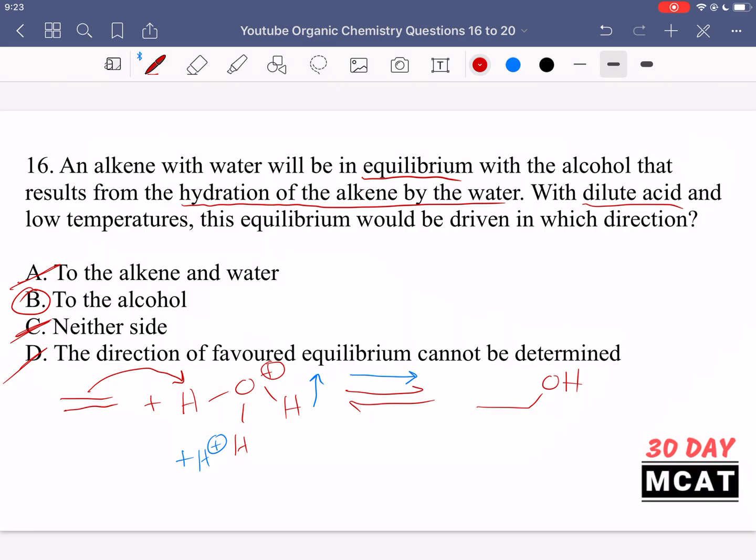We just have to think about the reaction that's taking place, what we know to be the reactants and the products, and then think about what dilute acid actually means. It means we're adding some more H plus, some more protons. So that means that we are changing the amount of reactants that we have. So if we can figure all this out from the question, then we know that according to Le Chatelier's principle, it's going to shift to the product side.